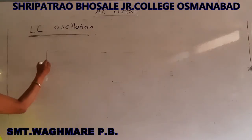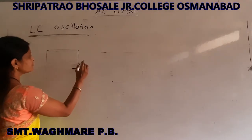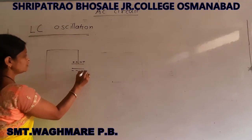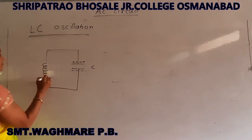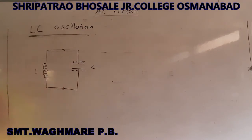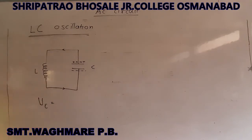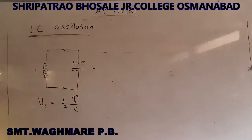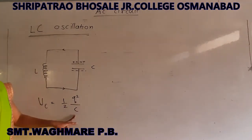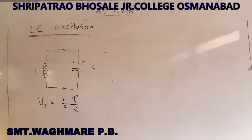Now we will discuss the different stages. In the first case, one plate of the capacitor has positive polarity and the other has negative polarity. This is the inductor and this is the direction of flow of current. The electrical energy stored in the electrostatic medium between the plates of the capacitor is given by: U = (1/2) × Q₀² / C, where U is the electrostatic energy, q is the charge on the capacitor, and C is the capacitance.